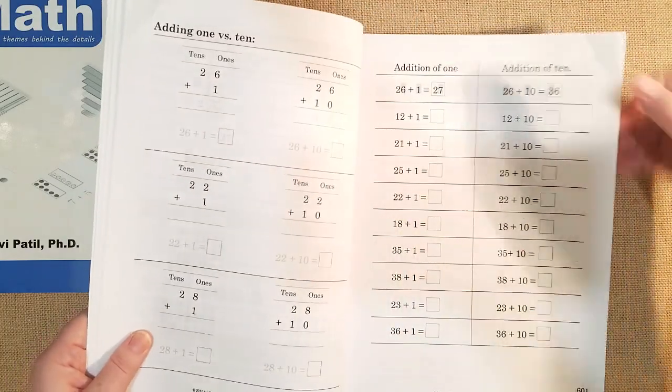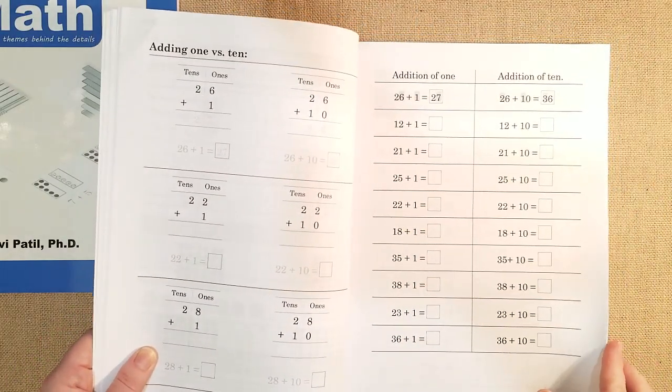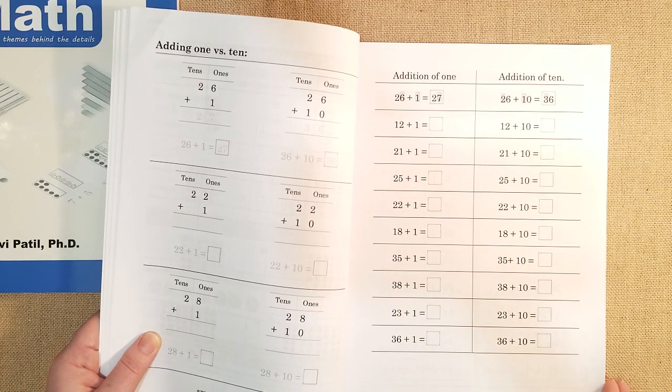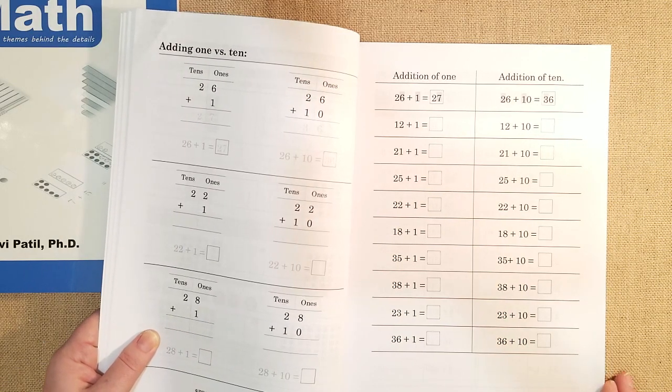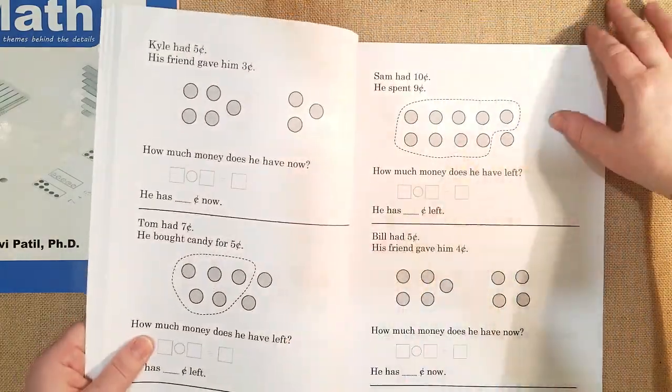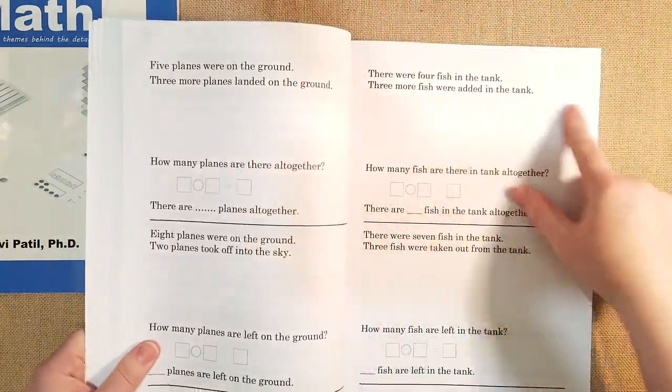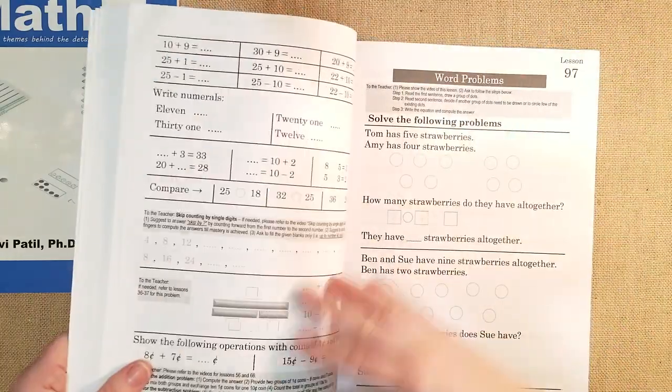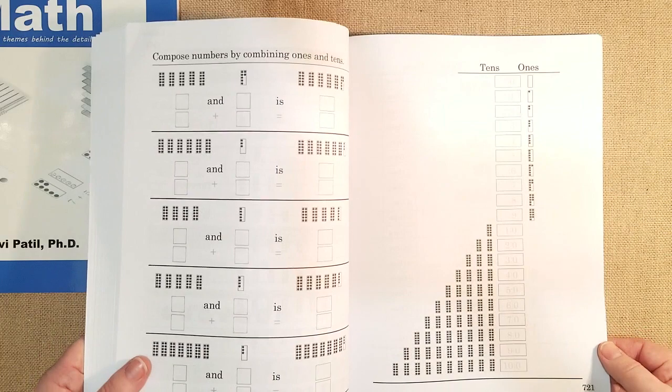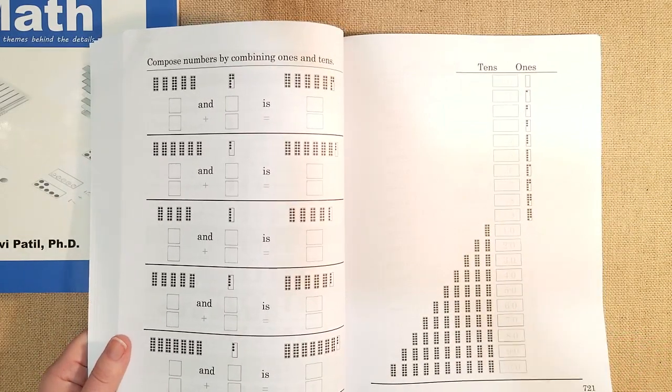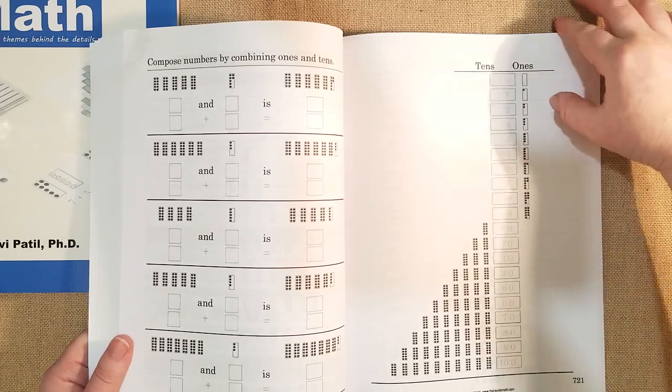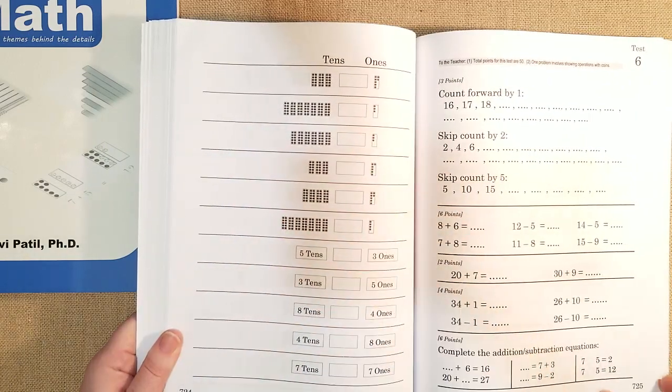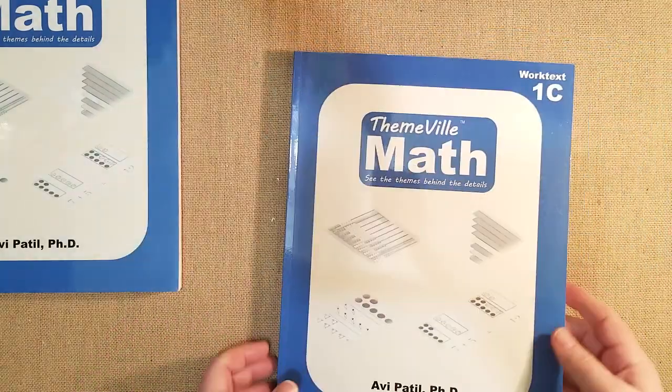And I love this how they do 26 plus 1 and they highlight the 6 and the 1 showing them that you just have to add 6 plus 1 equals 7 and then you carry the 2 over so you can get the answer. More word problems. Now there were 4 fish in the tank, 3 more fish were added, they want them to actually draw it on there so that's pretty cool for kids that like to draw and they could color. So even though it's a black and white workbook you can be creative, if your kids are artists they could draw on it. And I like how they also do, see again they're doing the 10s and then the 1s over here and the 10s and the 1s over here and they want you to put what the answer is in the rectangle right there. So that is 1C.